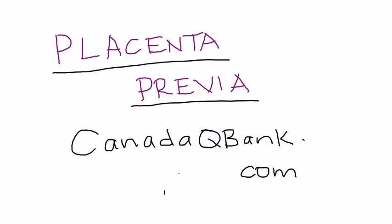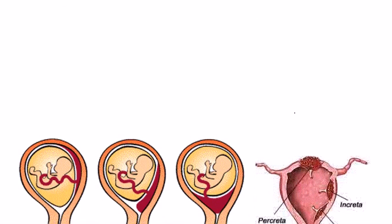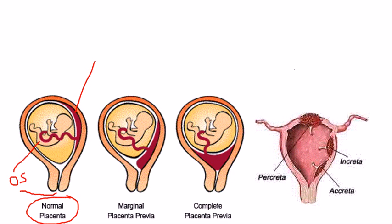Placenta previa is the topic for this presentation. The best way to talk about placenta previa is by showing a diagram. This is the normal placenta illustration, where this red squiggly line coming out of the baby's umbilicus is the placenta. It normally sits far away from the cervical os — O-S — which is the opening of the cervix.